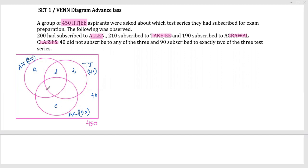The regions d, e, f, and g are labeled conventionally. The value 90 represents those who subscribed to exactly two of the three test series, so d plus e plus f equals 90.